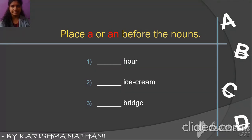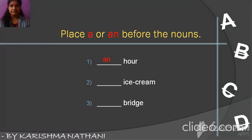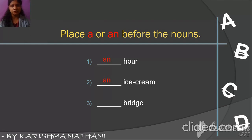Now let's start your textbook exercise so you can understand this concept easily. Place A or AN before the nouns. Blank hour — hour starts with a consonant but sounds like a vowel, so: an hour. Blank ice cream — ice cream starts with a vowel and sounds like a vowel, so: an ice cream. Blank bridge — bridge starts with a consonant and sounds like a consonant, so: a bridge.